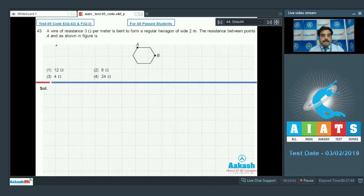Question number 43: a wire of resistance 3 ohm per meter is bent to form a regular hexagon of side 2 meters. Find the resistance between points A and B. For series resistance: R1 plus R2 plus R3. For parallel: 1 upon R1, 1 upon R2, and so on.